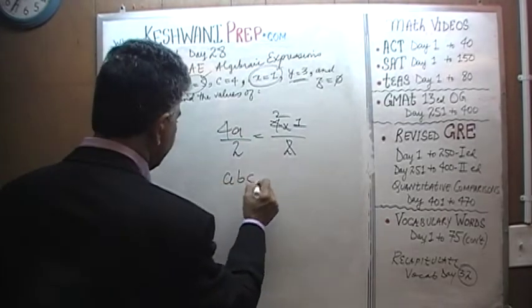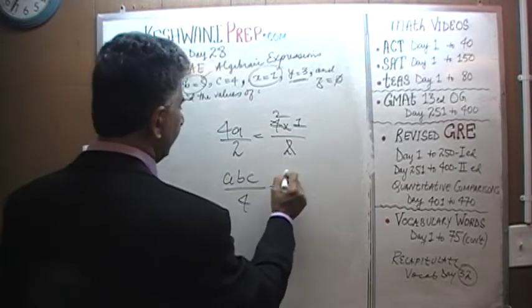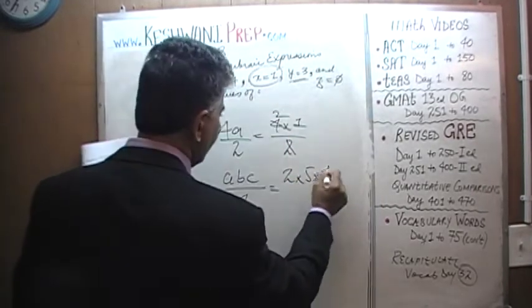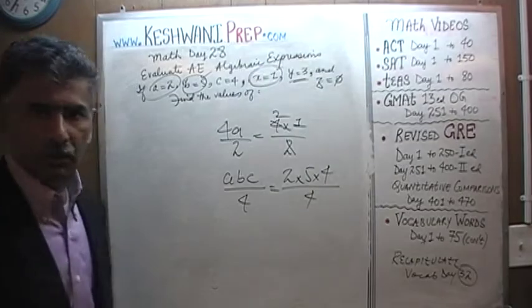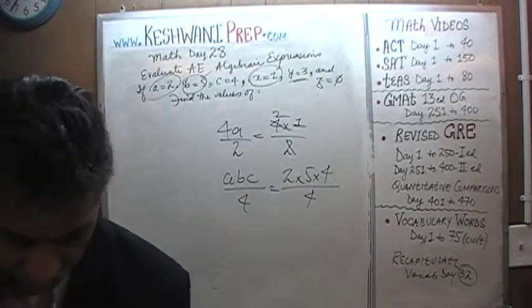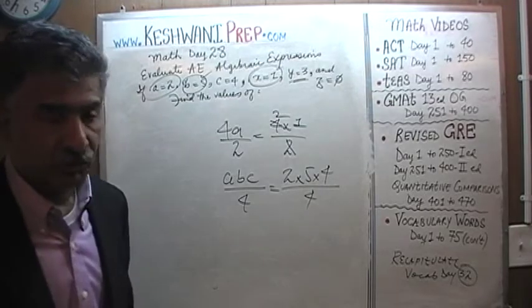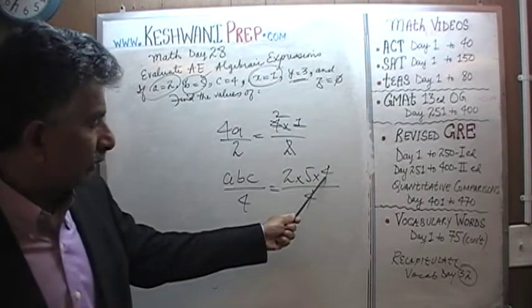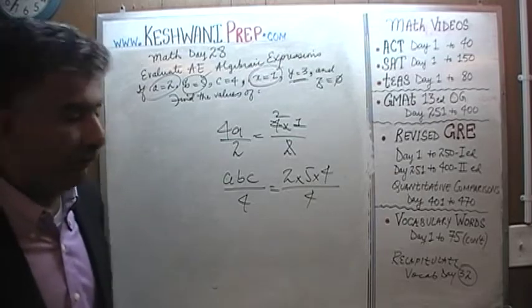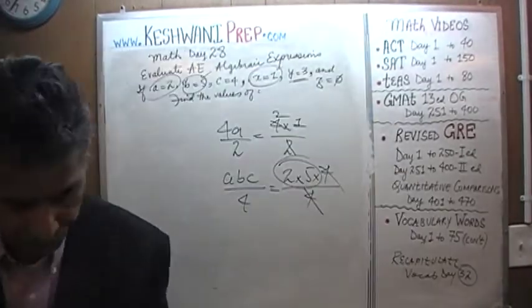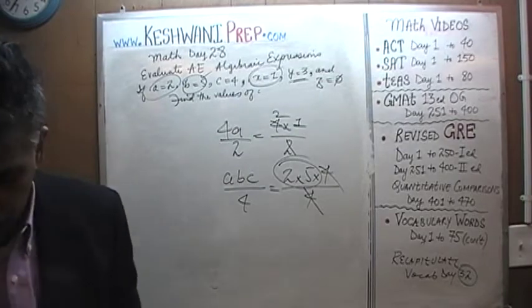ABC over 4. A is 2, B is 5, C is 4 over 4. Don't waste your time multiplying the top out completely, 2 times 5 times 4. That's not what you do. We see 4 on the top, we see 4 on the bottom. Let's divide top and bottom by 4. The 4s drop out and the answer is 10.